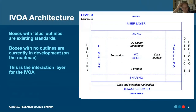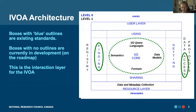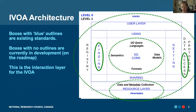Our architecture is based on this kind of diagram here. We have different layers that are all based around the core components, the VO core as we call it. We have data models, data formats, semantics for understanding data, and query languages for finding things. Those core layers and the whole layout here is really mapped nicely onto the finding, accessing, interoperating, and reusing concepts of FAIR.